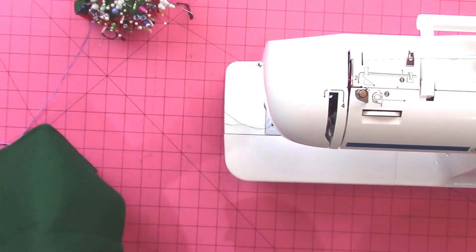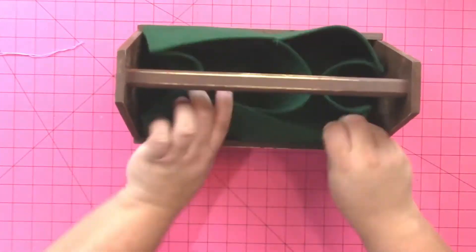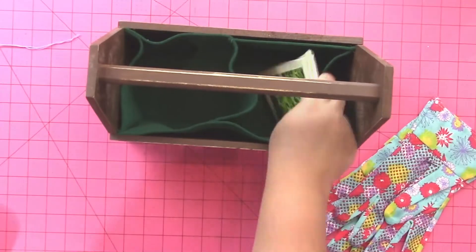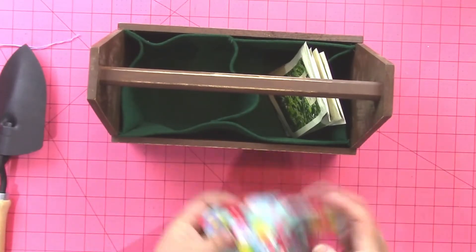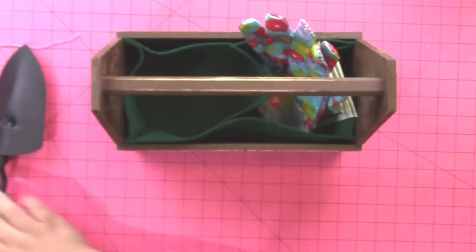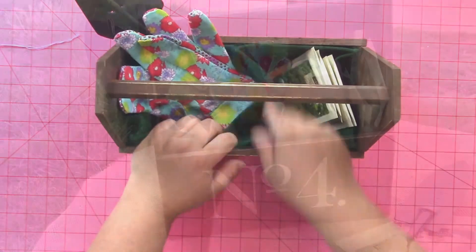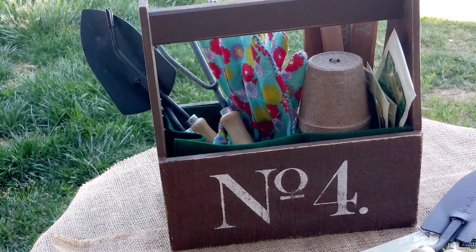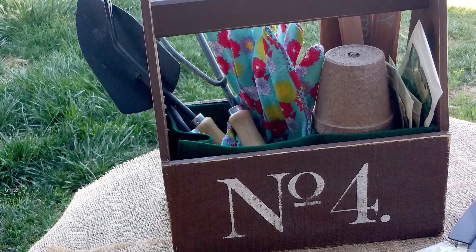And then once that is sewed in place, I'm going to sew the sides of the insert up and secure them so that it fits inside of my tote. Now my insert is a little bit loose and I'm okay with that. You could go in there and stitch it down a little bit more to make it a little bit of a tighter fit.